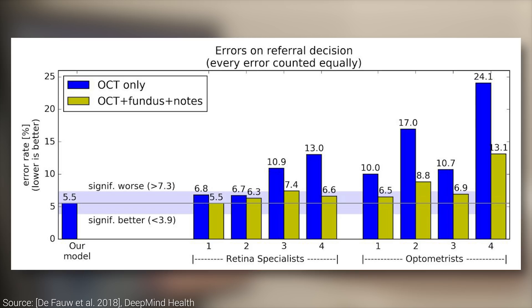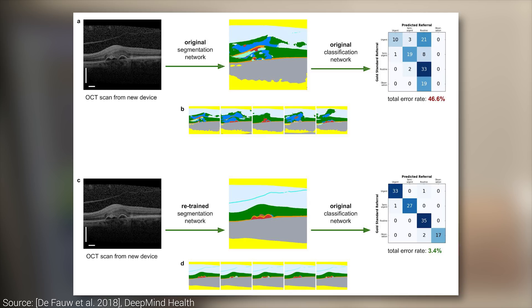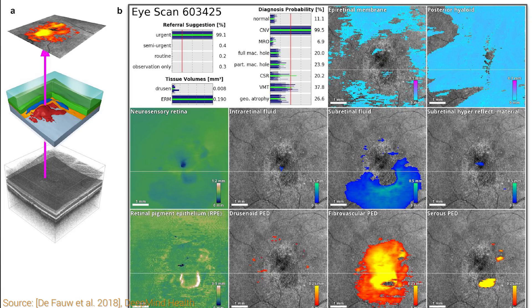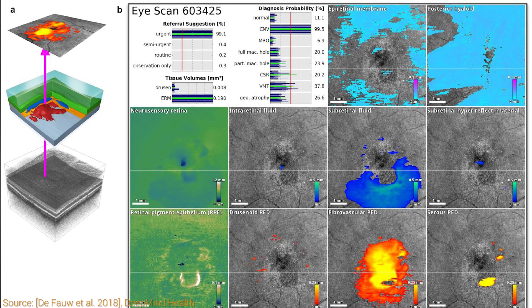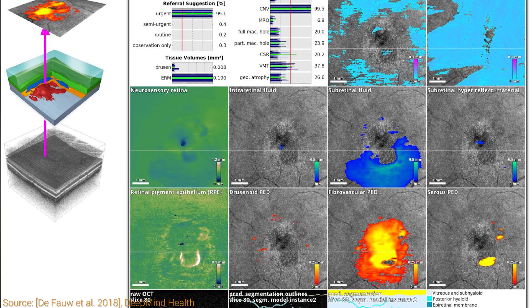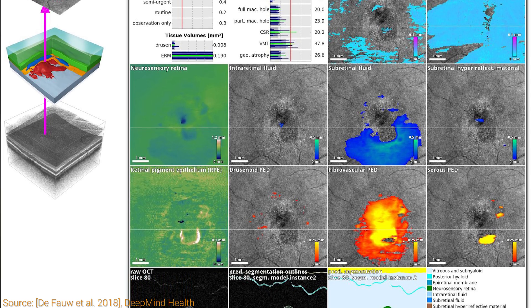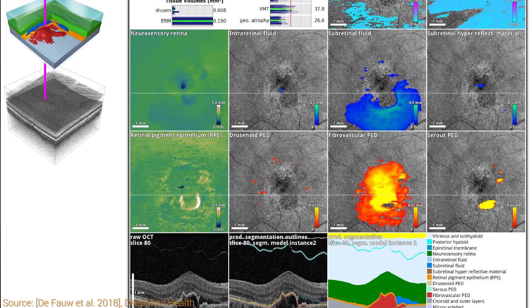I wouldn't believe any of these results if I didn't see these reports with my own eyes in the paper. An additional advantage of this technique is that it works on different kinds of imaging devices, and it is among the first methods that works with 3D data. Another plus is that this was developed in close collaboration with a top-tier eye hospital in London to make sure the results are as practical as possible. The paper contains a ton more information, so make sure to have a look. This was a Herculean effort from DeepMind, and the results are truly staggering. What a time to be alive!